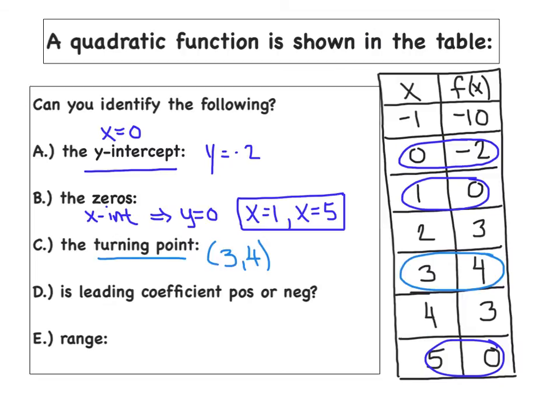Is the leading coefficient positive or negative? Try to imagine yourself plotting these points. What's happening is let's say we start at negative 10, we increase to negative 2, increase to 0, increase to 3, increase to 4. But that's where we turn around. Then we start to decrease to 3, decrease to 0. So what I'm picturing in my mind is a parabola that increased first, then decreased later. And I'm going to say, therefore, my leading coefficient, or the value of a, is a negative number. So I'm going to say a is less than 0.